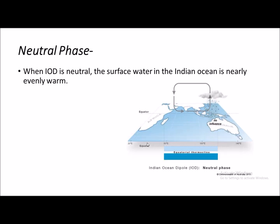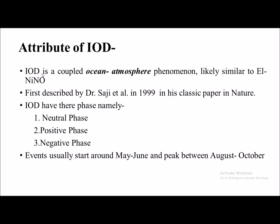Other important attributes of the Indian Ocean Dipole: IOD is a coupled oceanic-atmospheric phenomenon, not related to only the ocean or only the atmosphere. It is significantly driven by both ocean and atmosphere activity, similar to El Niño. IOD has three phases: neutral phase, positive phase, and negative phase. IOD events usually start around May–June and peak between August and October.